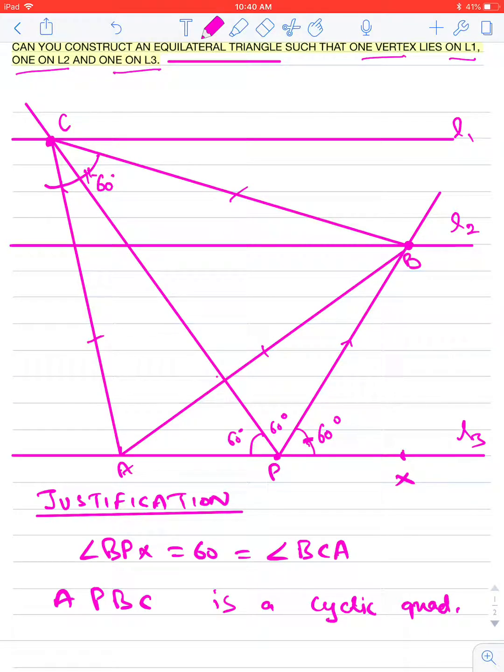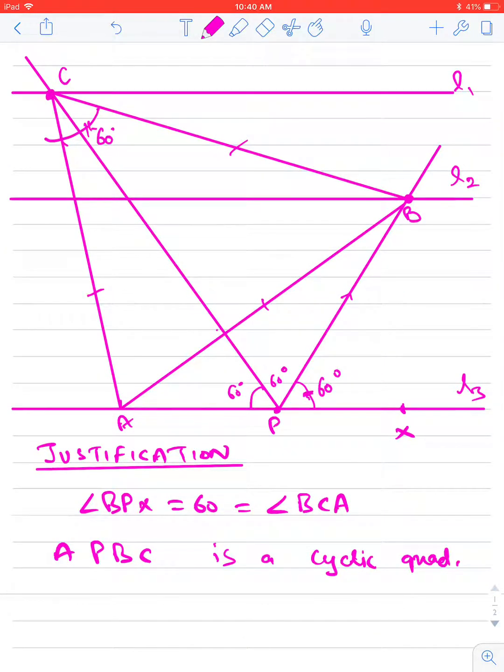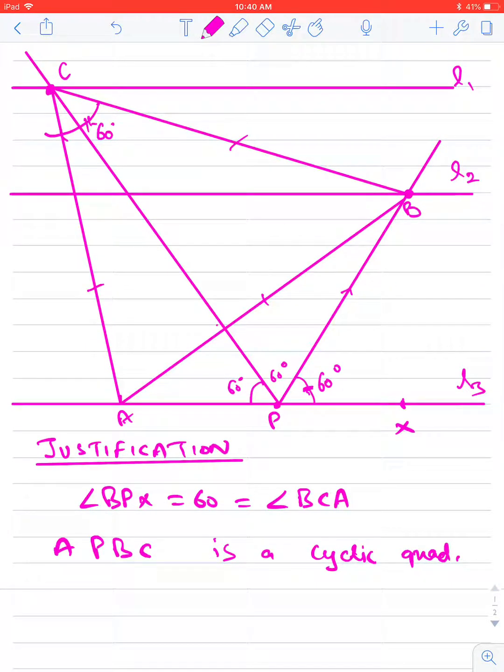Therefore A, P, B, C are cyclic. If these are cyclic, then by the angle in the same segment property: